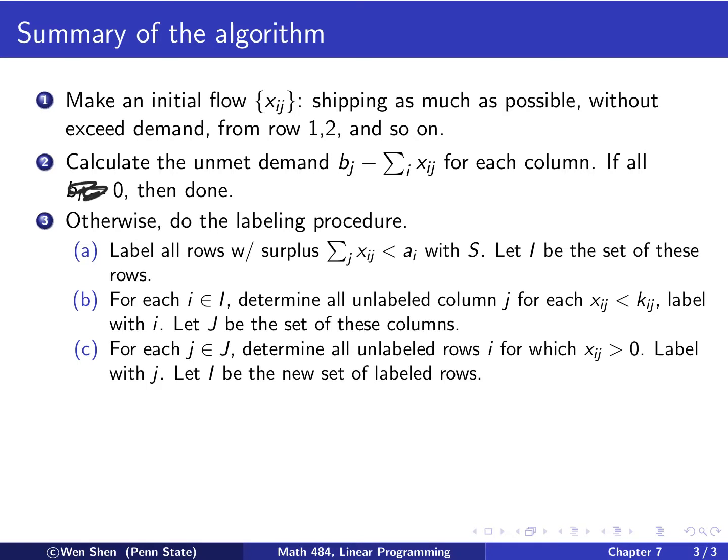3C. And then for each of these J, you would determine all unlabeled rows for which the xij is not 0, meaning you can reduce it. And then you will label all of them with J. And then you put all these row index in the set I.